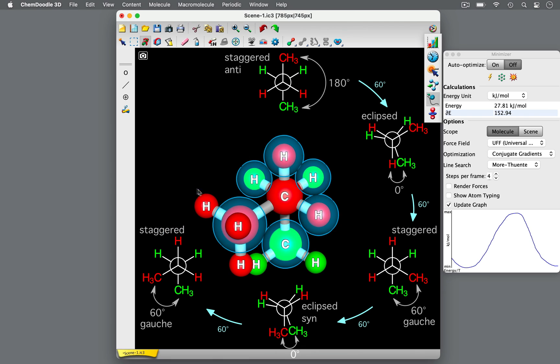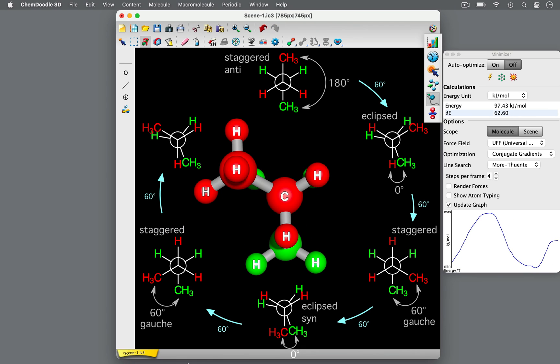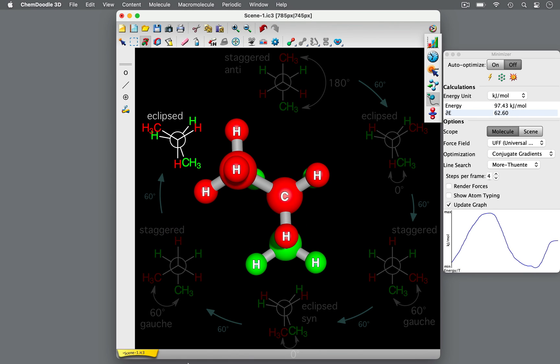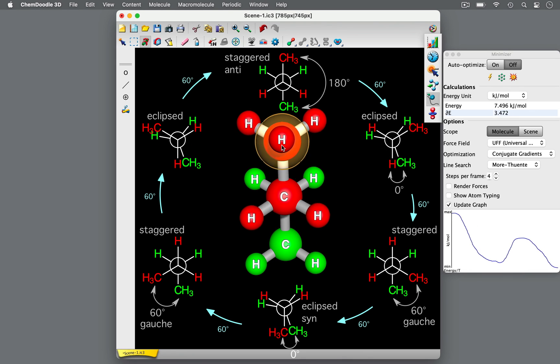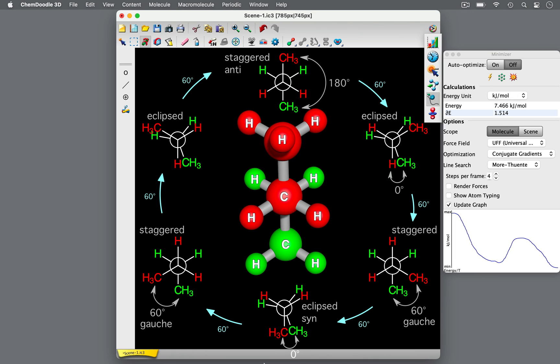Another 60 degree clockwise rotation gives us this view of a Newman projection. This eclipsed conformation, with the methyl to the left, has the same energy as this eclipsed conformation with the methyl to the right. A final 60 degree clockwise rotation brings us back to the lowest energy and most stable anti-conformation of butane.